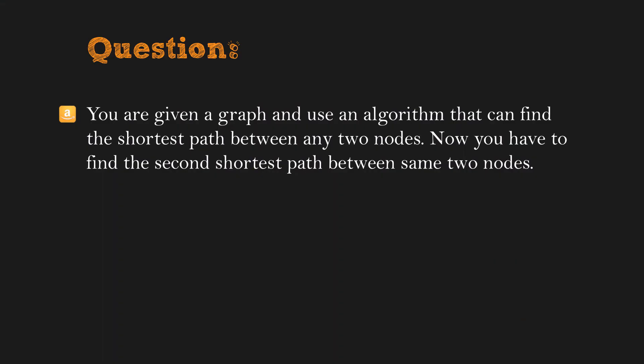Here is the question statement. You are given a graph and an algorithm that can find the shortest path between any two nodes. Now you have to find the second shortest path between the same two nodes.